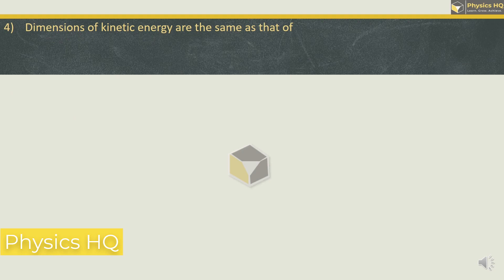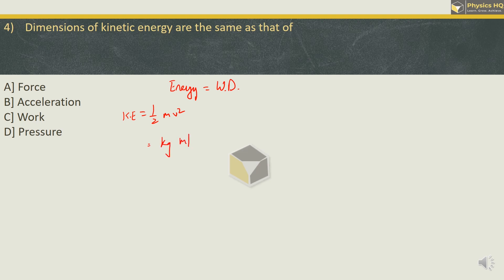Let us go ahead to the next MCQ. Dimensions of kinetic energy are the same as that of force, acceleration, work, or pressure. So always remember that kinetic energy or energy in simple words is always equal to work done. We can also verify this by using dimensional analysis. So over here we got kinetic energy, kinetic energy is given by the formula half mv square. If we write the units over here, for mass we got kg, for velocity we got meter per second. It is whole square. So we got kg meter square per second square.